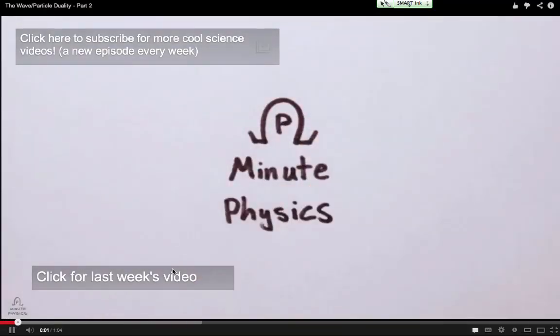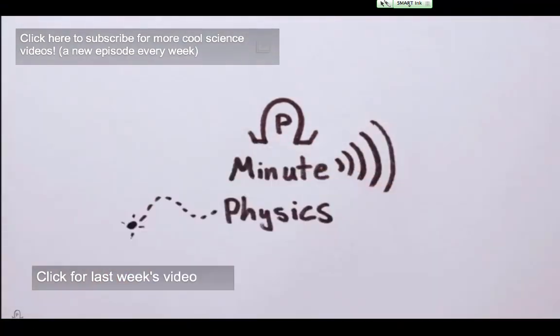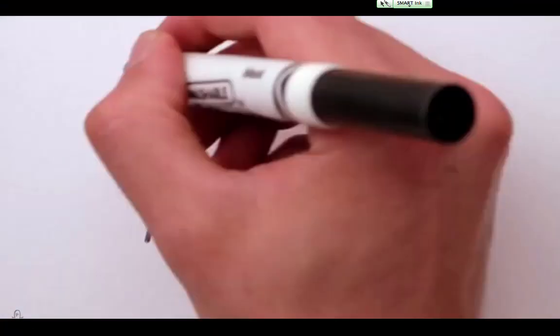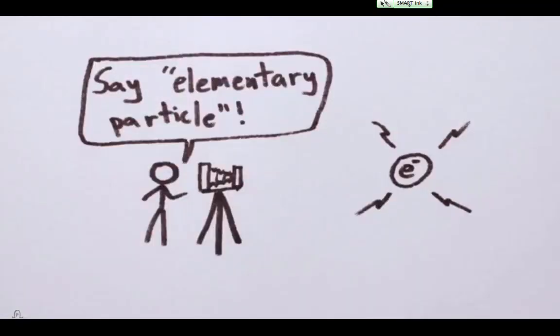In the last video, I introduced the idea that really small things act sometimes like waves and sometimes like particles. So how can we actually picture this wave-particle duality of, say, an electron?